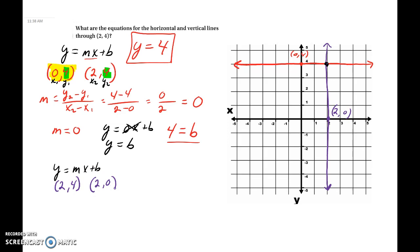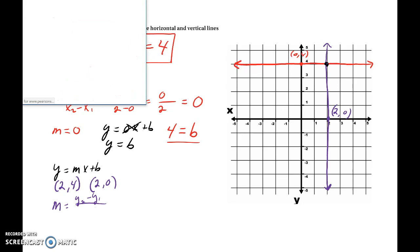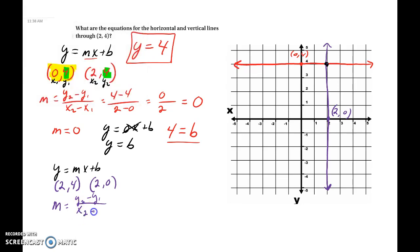Alright, so now in this case, we have our slope is equal to y2 minus y1 over x2 minus x1. Let's make this x1, y1, x2, y2. So then this will become 0 minus 4 over 2 minus 2, which is negative 4 over 0, which we can't do. We don't have a slope for this. So in this case, when it's vertical lines,